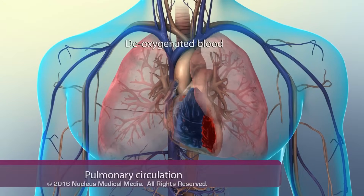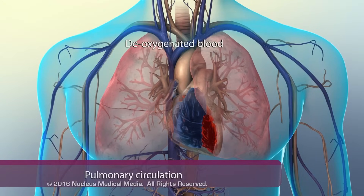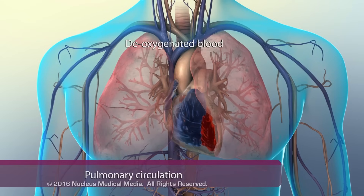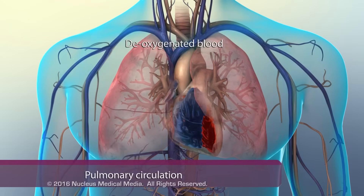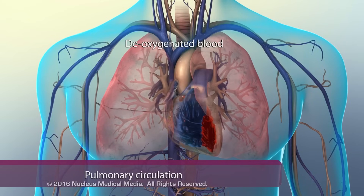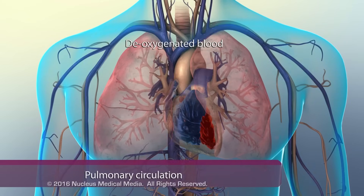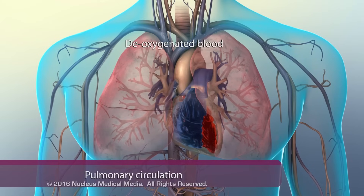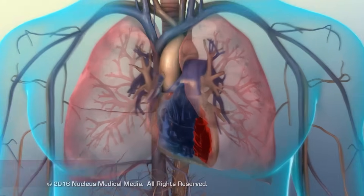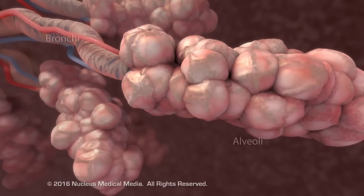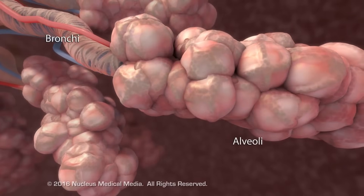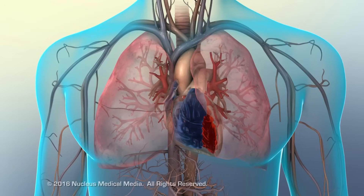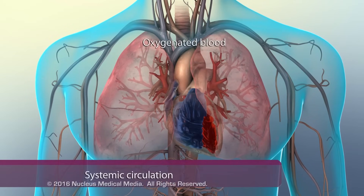The right side of the heart produces pulmonary circulation. This is the movement of deoxygenated blood from the body through the right atrium and ventricle, out through the pulmonary artery, and to the lungs. Blood oxygenated in the lungs' alveoli returns to the heart through the pulmonary veins.